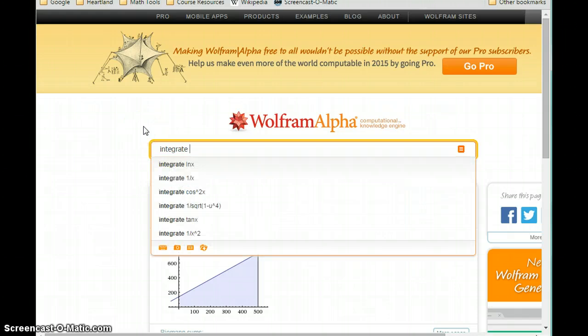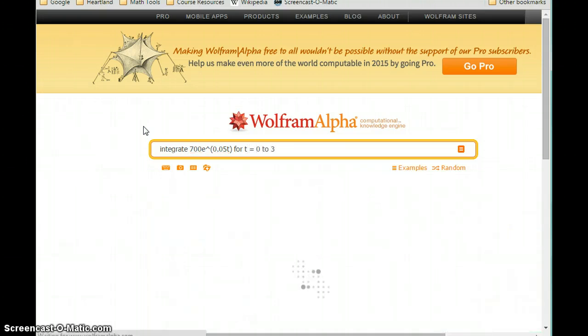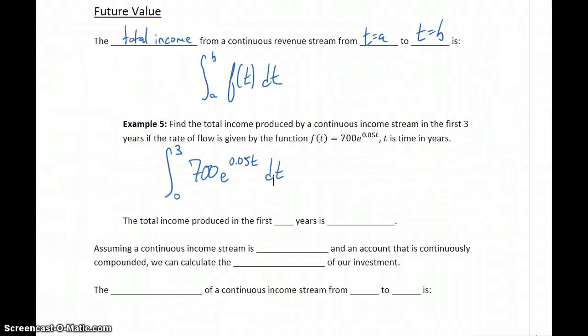We want to integrate this function, and what we get is the total income produced by that revenue stream over three years. In this case, $2,266 if we round that to the nearest dollar. So total income produced in the first three years is $2,266.